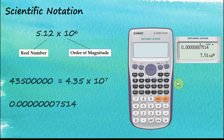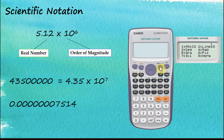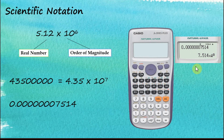Press equal, and the calculator tells us the answer is 7.51 times 10 to the power of negative 8. However, this number has four significant figures, and it's currently displayed in three significant figures because we earlier set scientific notation to three sig figs. If we would like the answer in four significant figures, go back to Setup, Shift, and set to four significant figures. The answer now displays as 7.514 × 10^−8.